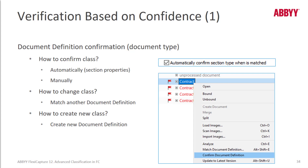Low-confidence classification results are highlighted in red. Class confirmation can be done automatically using a feature called Automatically Confirmed Section Type when matched. That option is in the section Properties.